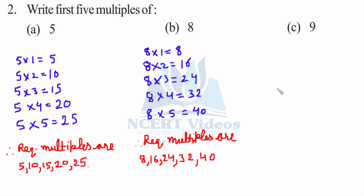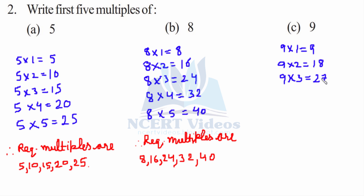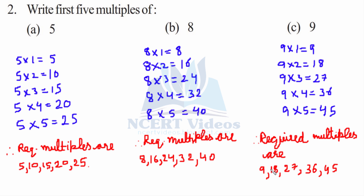For 9: 9 into 1 gives you 9. 9 into 2 gives you 18. 9 into 3 gives you 27. 9 into 4 gives you 36. 9 into 5 gives you 45. So the required multiples are 9, 18, 27, 36, 45. That is your second question.